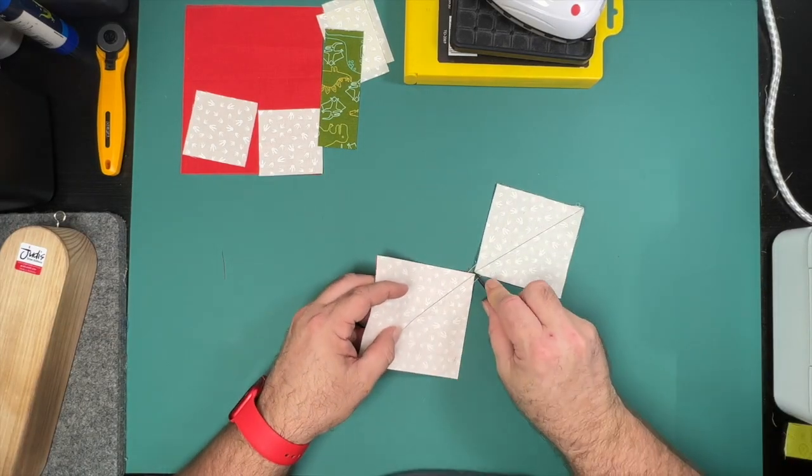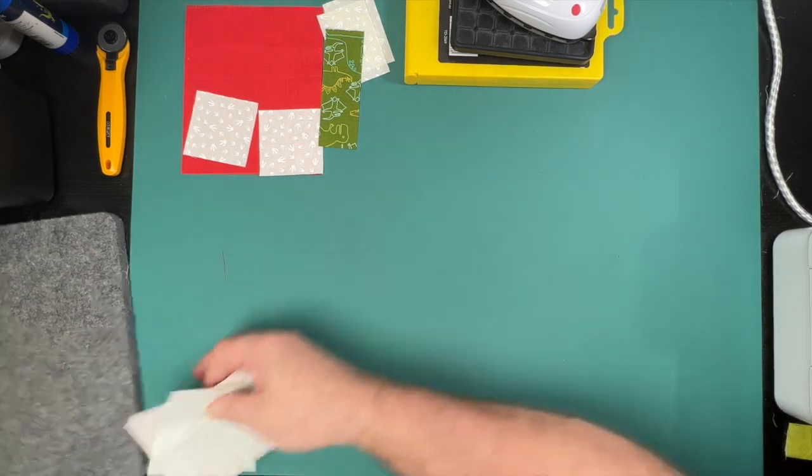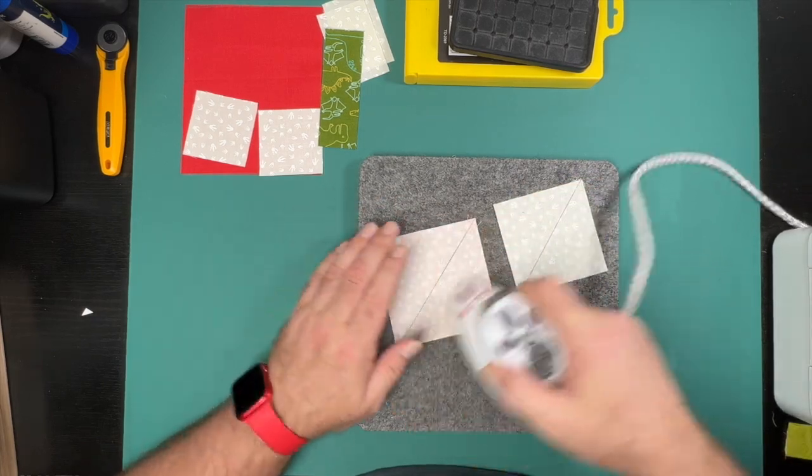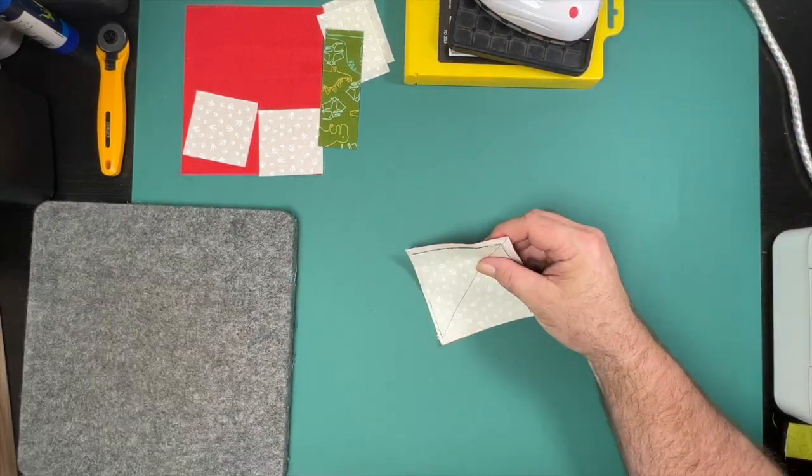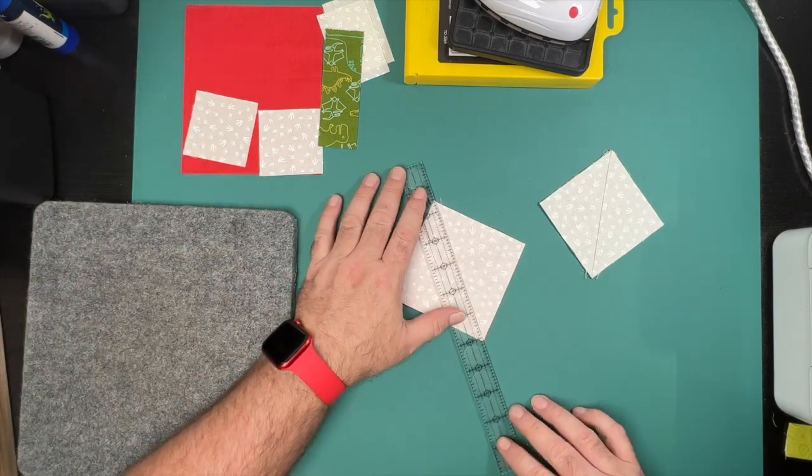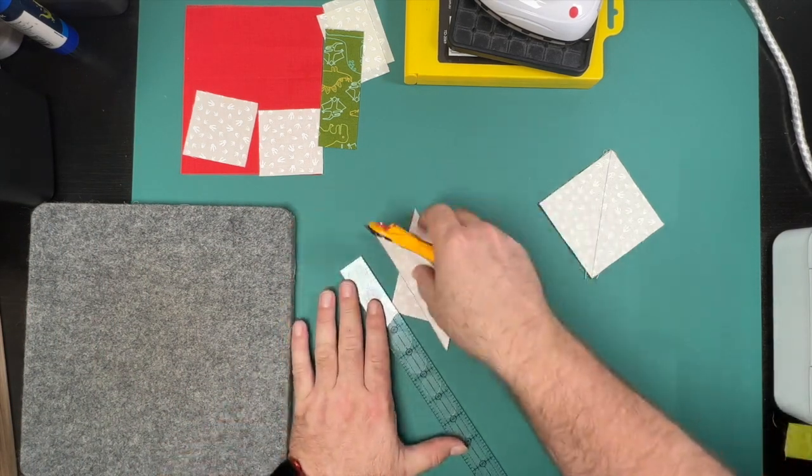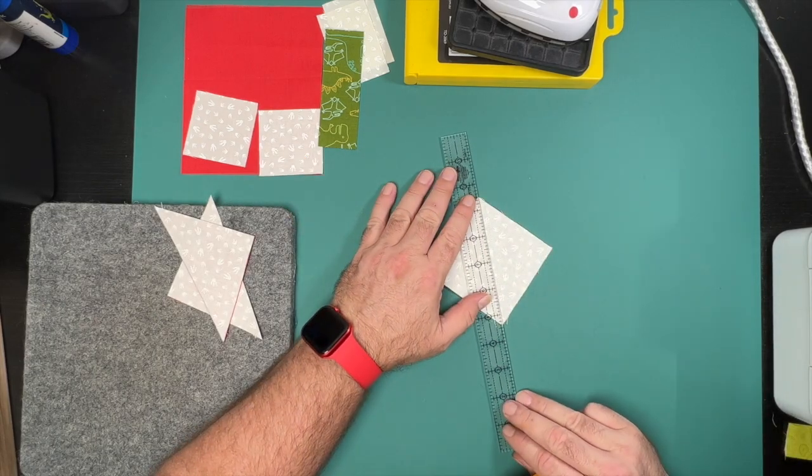With our stitching now done, we take it over to our pressing mat and just press to set the stitches first before slicing it in half. That's optional, it's just the way that I prefer to do it of late. So we'll take these and cut them in half along our drawn line, and then press all of these towards the darker of the two fabrics.